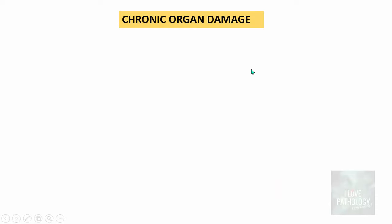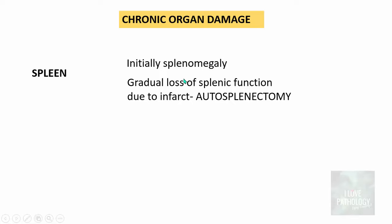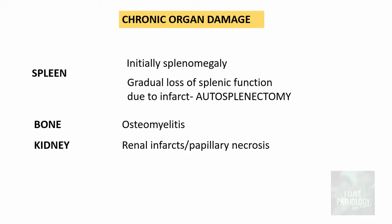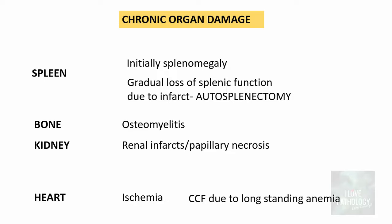Chronic hemolysis and microvascular occlusion result in chronic organ damage. In the spleen, there is initially splenomegaly, but over time there is gradual loss of splenic function due to repeated infarcts — the spleen gets transformed into a thin band of fibrous tissue, known as autosplenectomy. Bone involvement causes osteomyelitis. In the kidneys, renal infarcts and papillary necrosis occur. Heart involvement can cause ischemia, or long-standing anemia can lead to congestive cardiac failure. Long-standing skin ulcers are also a manifestation.